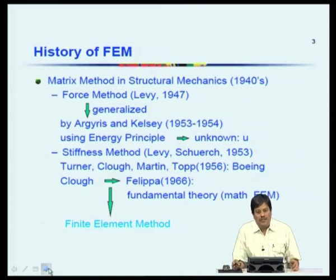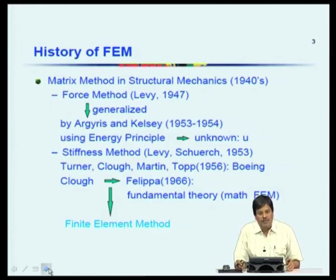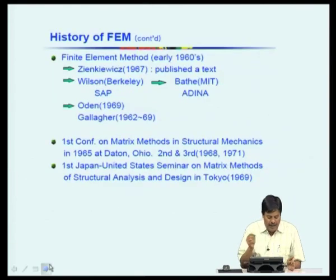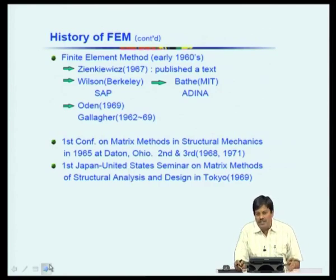Let us go into the history of the finite element method. The finite element methods were started by civil engineers as part of structural mechanics problem solving. It was initially developed by John Argeres from Germany and Levy as early as 1947 to 1953, and then the method was called the stiffness method by Turner and Clough at the University of Berkeley, which was the starting point of the finite element method.